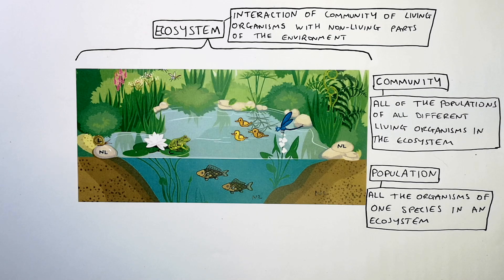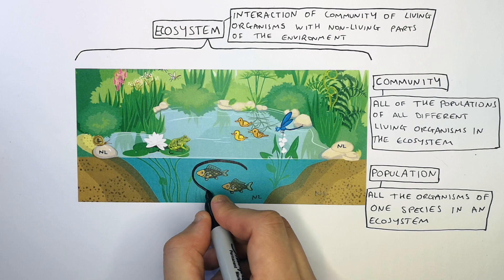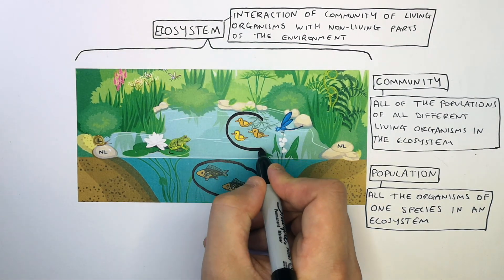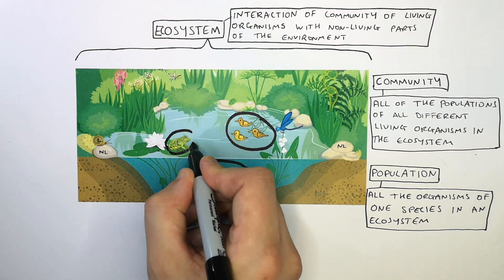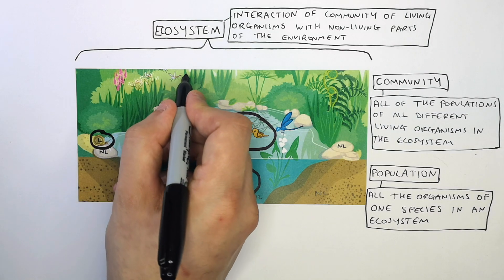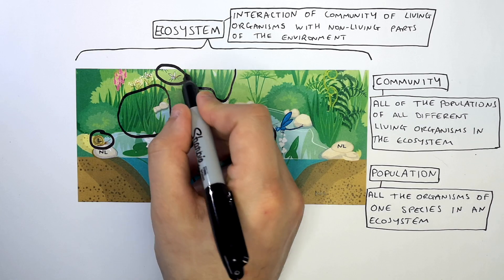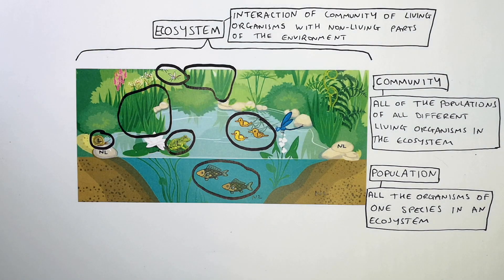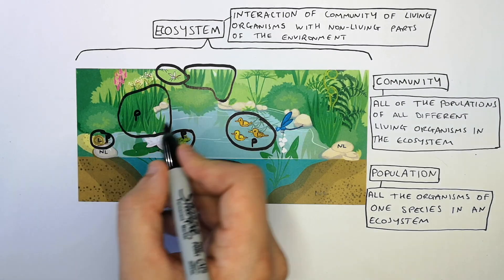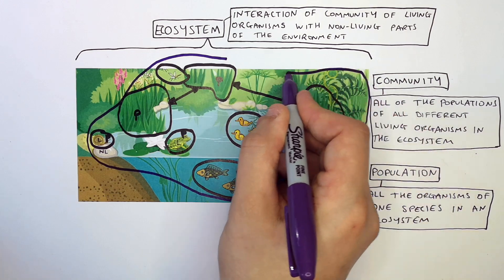Examples of populations are as follows: the fish are a population — they are one species within an ecosystem. The ducks are a population of a single species. The frogs are a population of a single species. The snail is a population. The dragonfly is a population. And all of the grass, if it's one species, is a population. The community is all of the populations within the ecosystem — all of them together is the community.